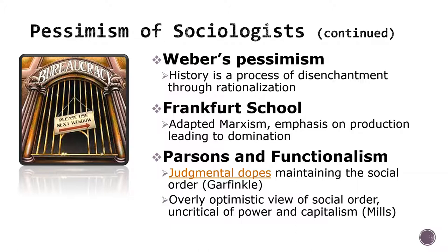Sociologist C. Wright Mills, a contemporary of Parsons, not only assessed Parsons' work as painting a dark picture of human society, but also found that where Parsons was optimistic, he went overboard. His work ignored power and capitalism, creating a worldview that uncritically examined existing social systems and therefore reinforced power relations that were oppressive of many.